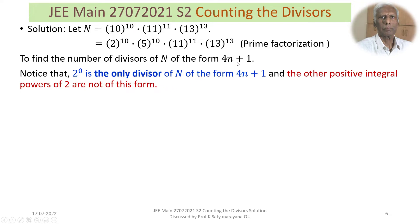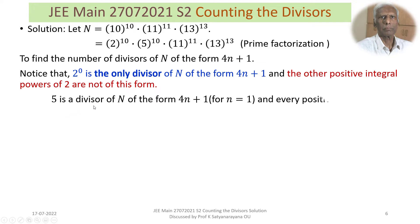2^2 = 4 is not of the form 4N+1, 2^3 is not, 2^4 is not, and so on. The other positive integral powers of 2 are not of the form 4N+1. However, 5 is a divisor of N and it is of the form 4N+1 — for N=1, 4N+1 = 5. And every positive integral power of 5 is also of this form; for example, 25 = 4×6+1.